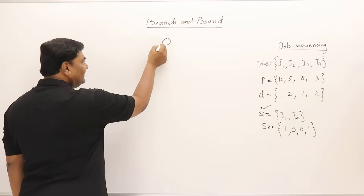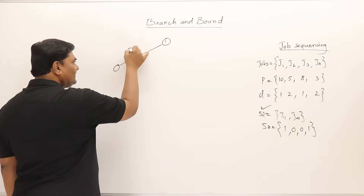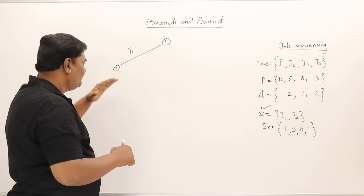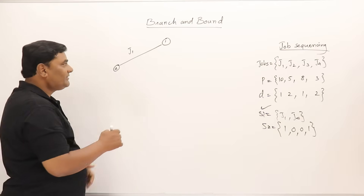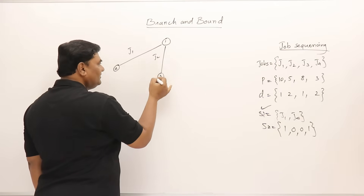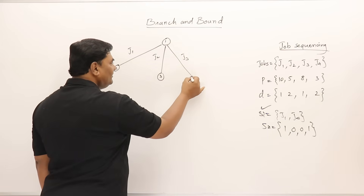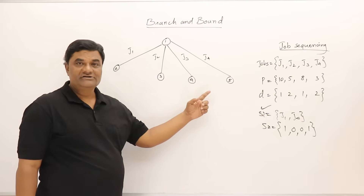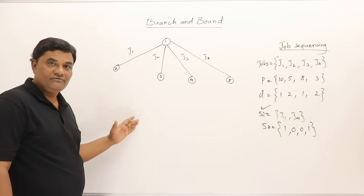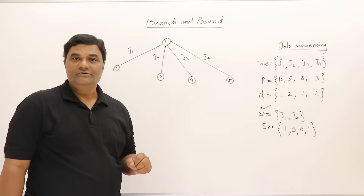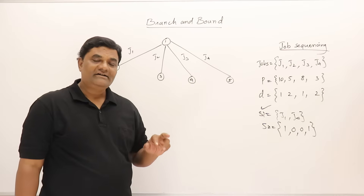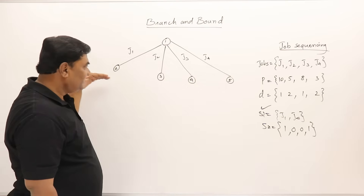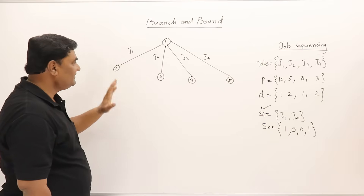In the subset approach, I first consider job one, and then — unlike backtracking — in branch and bound we also consider the second, third, and fourth jobs at the same level. This is like breadth-first search; we don't go depth-wise. The key difference between backtracking and branch and bound is that backtracking uses depth-first search while branch and bound uses breadth-first search.